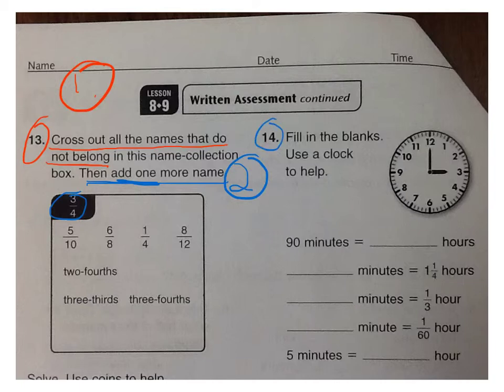Number 14. Fill in the blanks. Use a clock to help. And I also have a clock in the classroom you can use to help you when you come to this one. But feel free to use the clock that's right here. 90 minutes equals how much of an hour. Write that as a fraction. Remember to divide up your clock accordingly. Blank minutes is one and one quarter hours. Blank minutes is one third of an hour. And blank minutes is one sixtieth of an hour. Five minutes equals how much of an hour. So try to divide those up the best you can. If you're not sure try to make an estimated guess. Remember how many minutes are in an hour, and that'll help you.